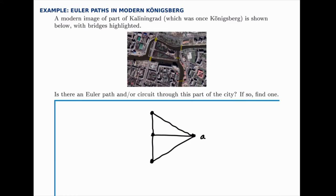So let's label these A, B, C, and D, just for a way to describe it, and we want to see if there's an Euler path or an Euler circuit.